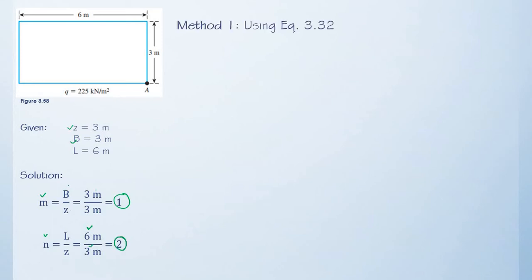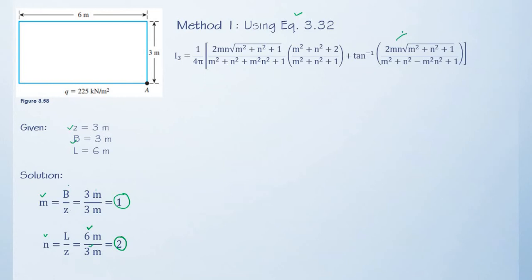We now then consider method 1, which is by the use of equation, to solve for the value of I₃. Keeping in mind that this has to be converted into radian. Since we already have the value of M and N, we can directly substitute our equation.